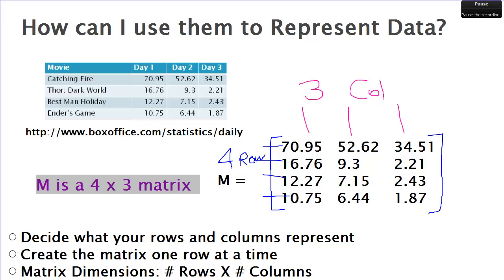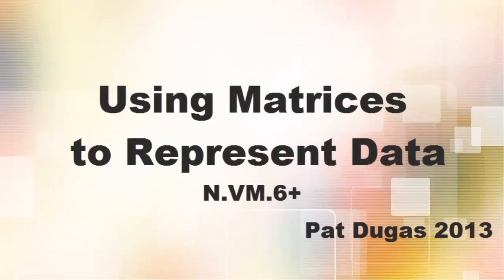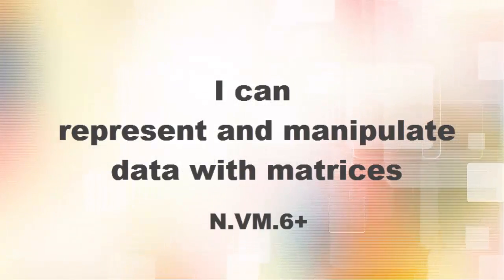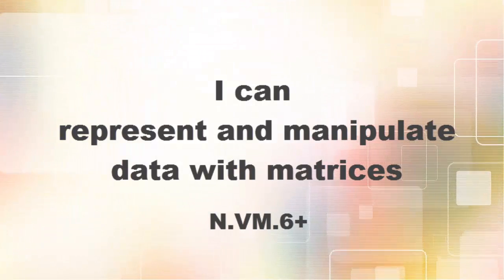So what kinds of things can we do with this data? We'll get more into that when we deal with operations on matrices, but there are several things you can do: add up the box office on particular opening days, add up totals for a movie over time, compare different movies, look at trends — for example, how opening day differs from day two — and make predictions for what day four might look like. Matrices are very critical in our complex information age.